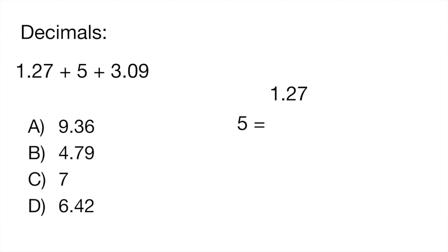Okay so hopefully you paused the video and this is the explanation for the answer. To add these decimals we would just line them up as you usually would: 1.27. And then we have a 5 and here what you have to remember is that when you have a whole number you would just say 5.00 or 5.0. And then you have 3.09. All you do is add these three numbers together and it gives you 9.36. That's all there is to adding decimals.